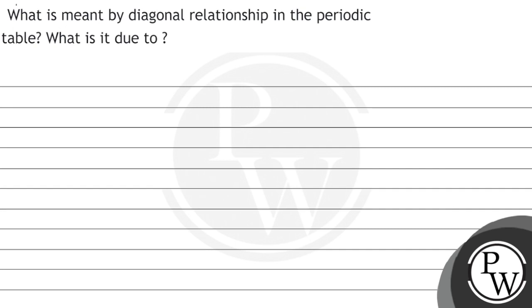Hello students, let's solve this question. The question reads: what is meant by diagonal relationship in the periodic table and what is it due to?